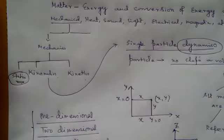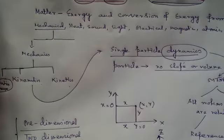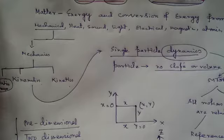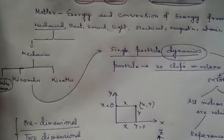In our first chapter, this is single particle dynamics. When we look at the definition of the particle, the particle is the same as the object of the shape. This could be a train, a bus, or an aeroplane — this is the object of the particle. This is particle dynamics.